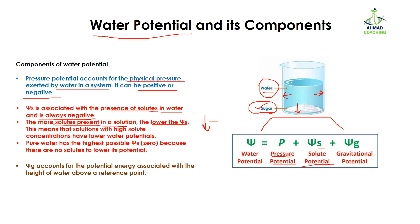As solute concentration increases, water potential decreases, so solute potential becomes more negative. As the amount of sugar increases, the amount of water effectively decreases. Pure water has the highest possible solute potential, which is zero, because no solute is present. As solute concentration increases, the value moves from zero toward negative.